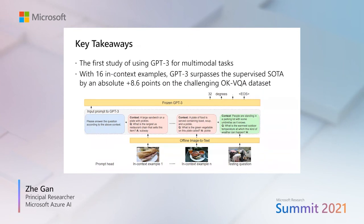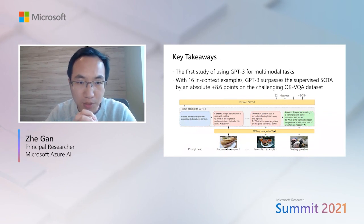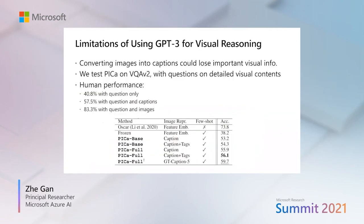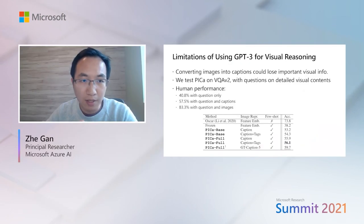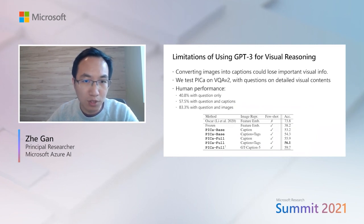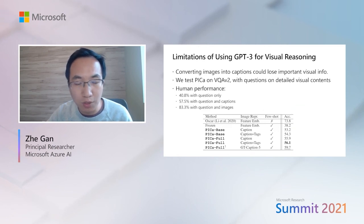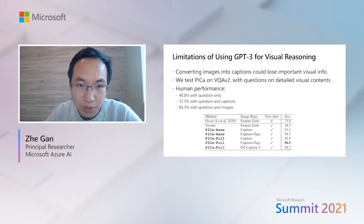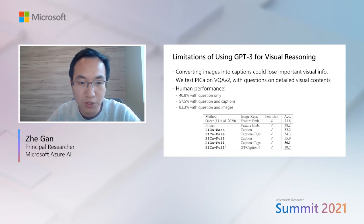To summarize, we are the first to study how to use GPT-3 for multimodal tasks, and with very few in-context examples, GPT-3 can surpass the supervised SOTA by a very significant margin. However, there are obvious limitations: because we convert images into captions, important visual information is lost. We tested PiKa on VQA v2 with questions on detailed visual contents, and indeed the performance lags behind the supervised SOTA — though it is still better than the Frozen method.